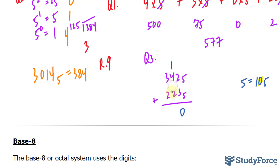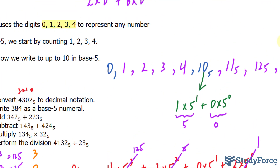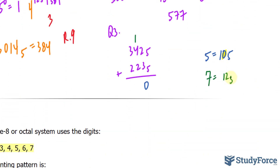Then 1 plus 4 plus 2 equals 7. You can't write down 7 — in base 5, 7 is 12 sub 5 — so we write down 2 and carry the 1. Then 1 plus 3 plus 2 is 6, which is the same as 11 sub 5. Since there are no more numbers to add, we write down 11. So the answer is 1,120 sub 5.